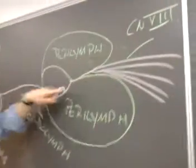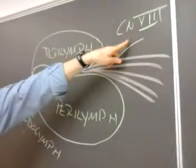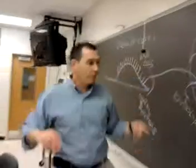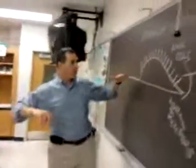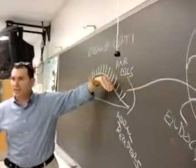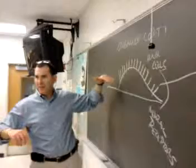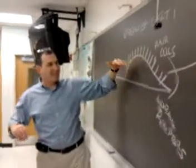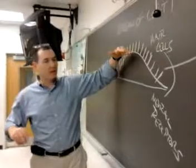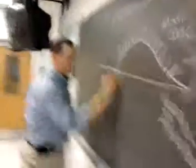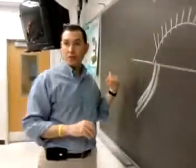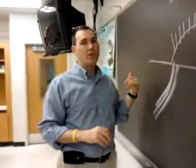As the endolymph moves those little hair cells, I then transmit that hearing information along to cranial nerve number eight for hearing. It's the fluid movement that bends these little hair cells - they come like wheat in a field - and as they bend they transmit that information back to cranial nerve number eight, which goes back to the brain to the temporal lobe.